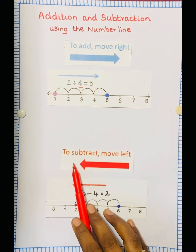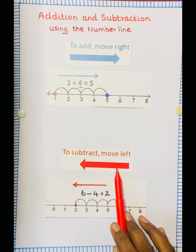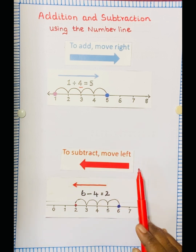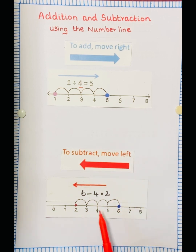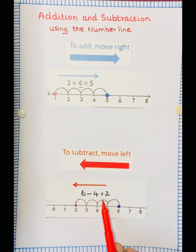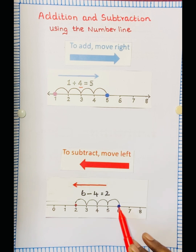To subtract, we have to move to the left side. For example, 6 minus 4. Where is 6? Here is the 6.